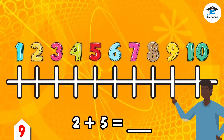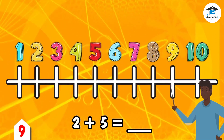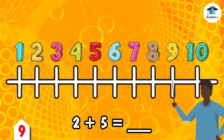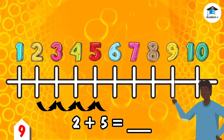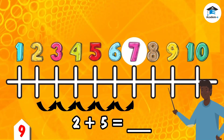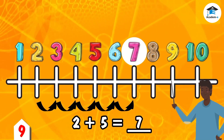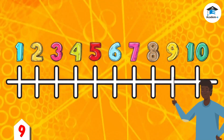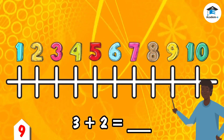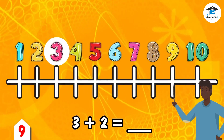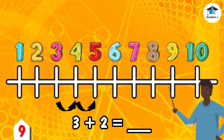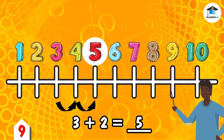Second example: let's find the sum of 2 and 5. We start at number 2, then 5 steps forward: 1, 2, 3, 4, 5. We end at number 7 — the sum of 2 and 5 is 7. Third example: let's find the sum of 3 and 2. We start at number 3, then 2 steps forward: 1, 2. We end at number 5 — the sum of 3 and 2 is 5.